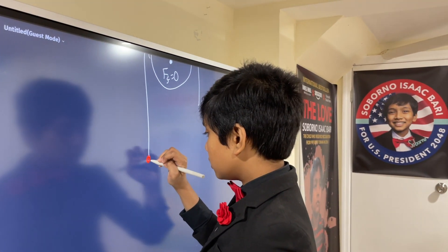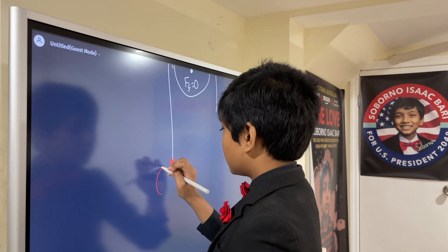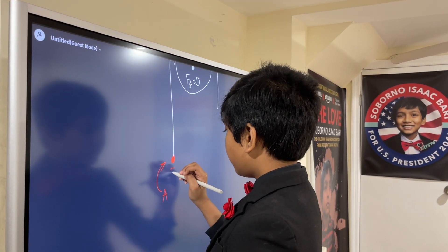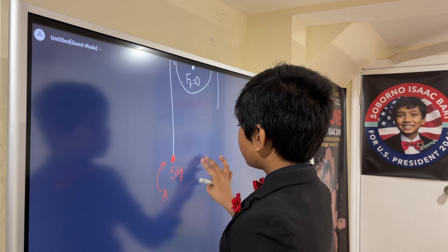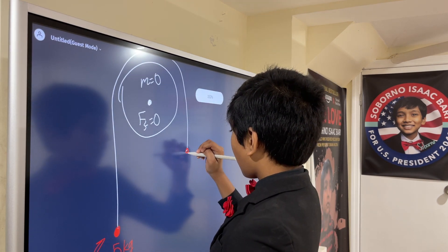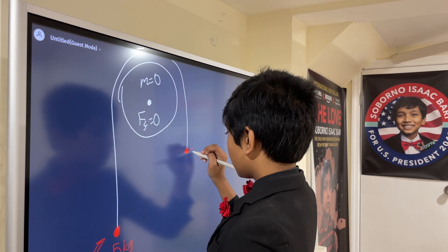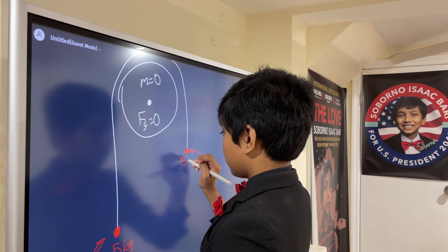So, this point mass, which we're going to call A, is 5 kilograms, and this point mass, which we're going to call B, is 15 kilograms.